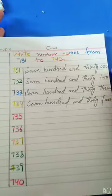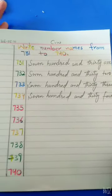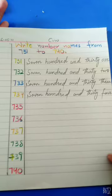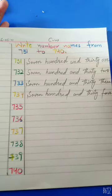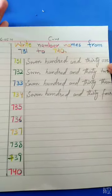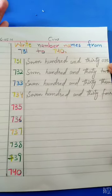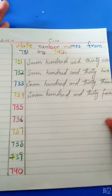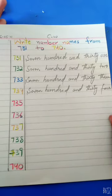Now it's time for your homework. Today your homework is: write number names from seven hundred and thirty-one to seven hundred and forty on your math copy. And also revise tables of six and seven. Complete your homework and send me on WhatsApp group.